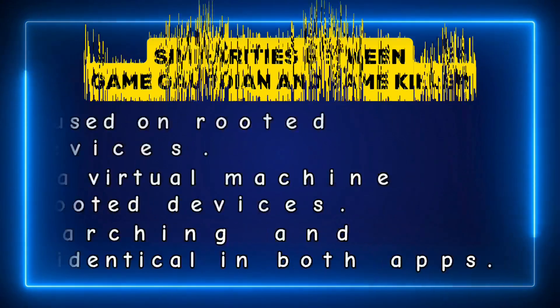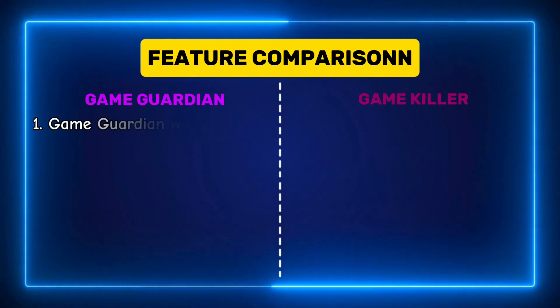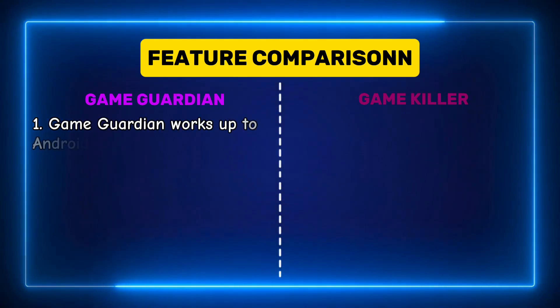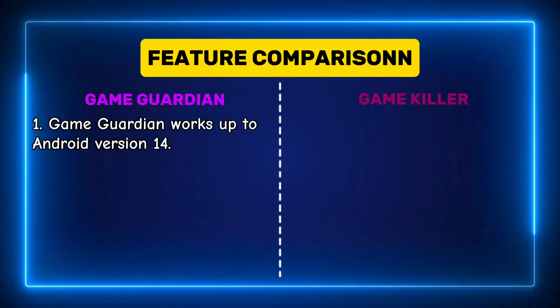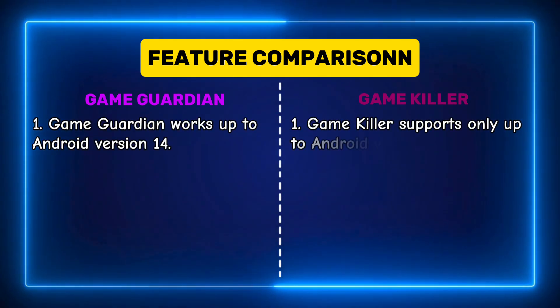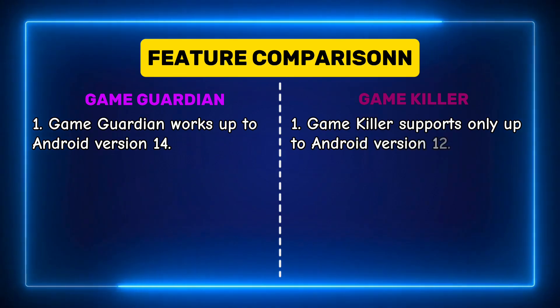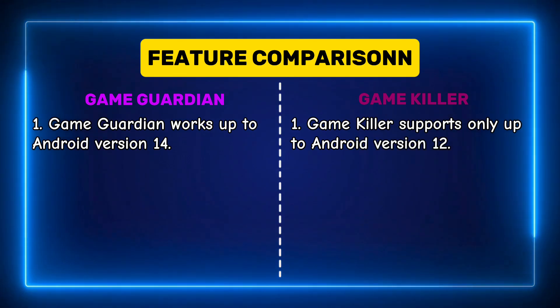Now let's compare the features. From my tests, GameGuardian works up to the latest Android version 14. However, GameKiller supports only up to Android version 12, no matter which virtual machine is used.